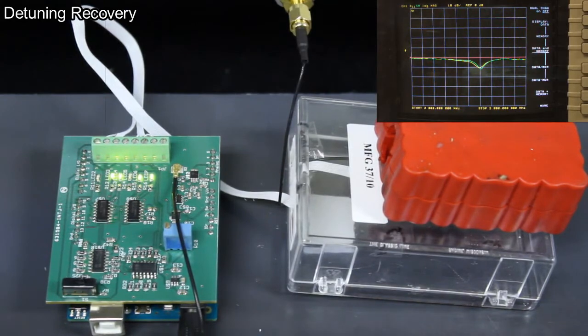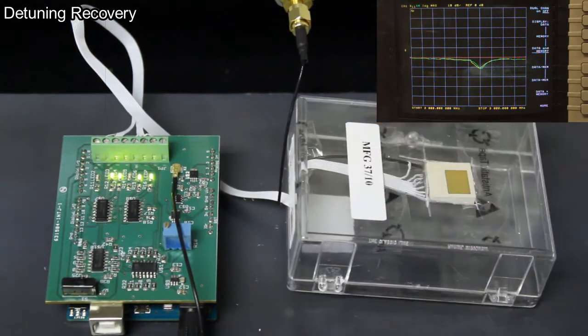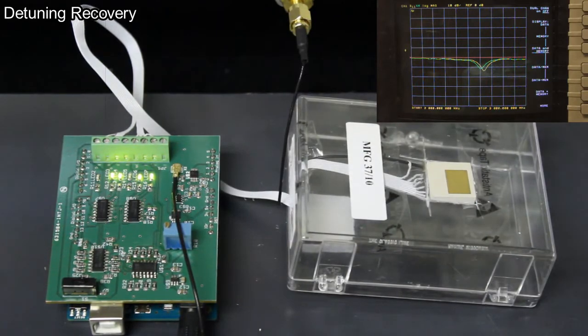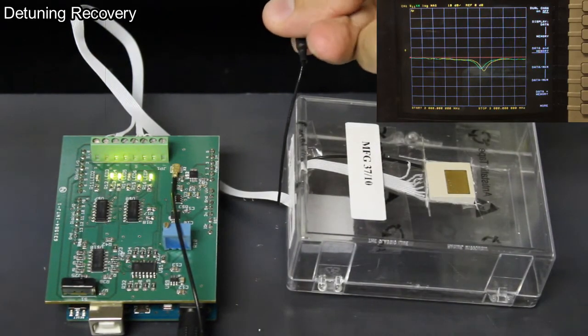We can see the opposite case by removing the red block and seeing the antenna detune upward in frequency. The yellow line on the network analyzer moves to the right, indicating that indeed it tuned upward.